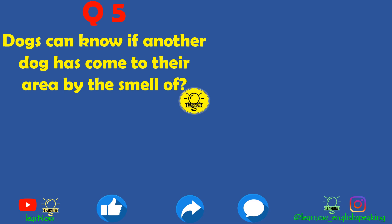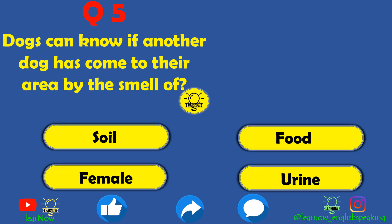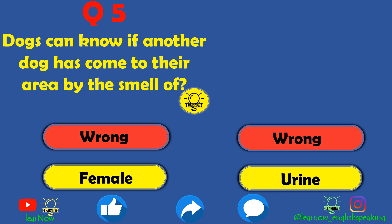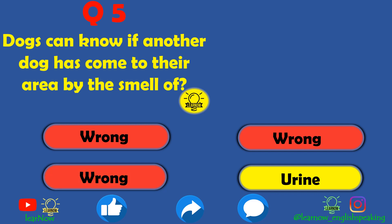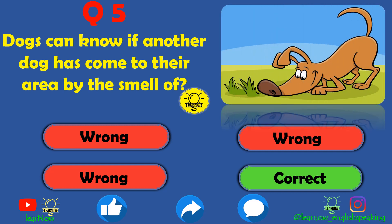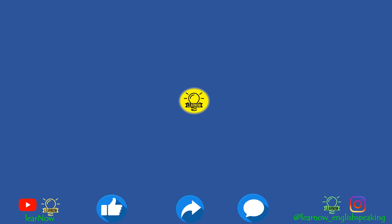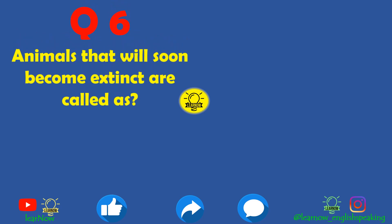Next question: dogs can know if another dog has come to their area by the smell of what? The options are soil, food, female, or urine. Soil, food, and female are all wrong. Urine is the correct answer. Dogs have a strong sense of smell and can sniff and recognize that a dog from a different area has entered their territory.